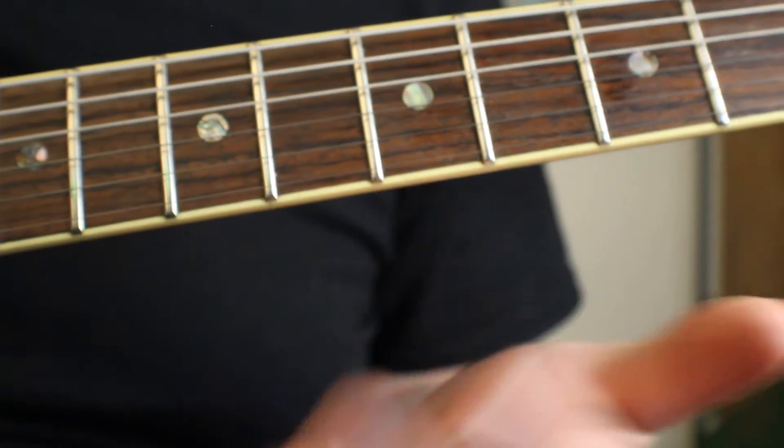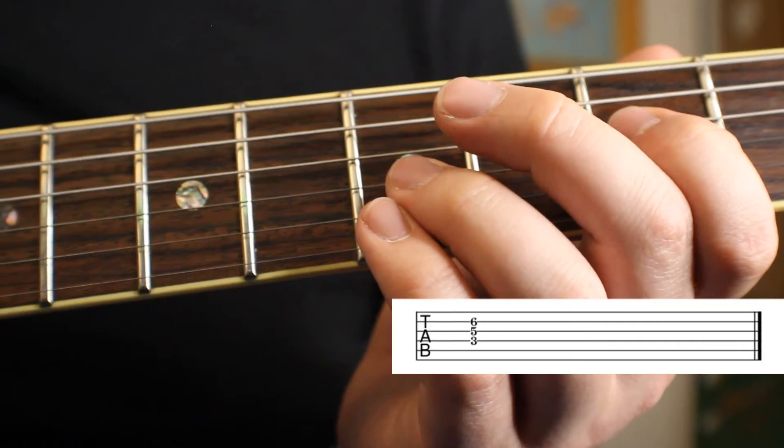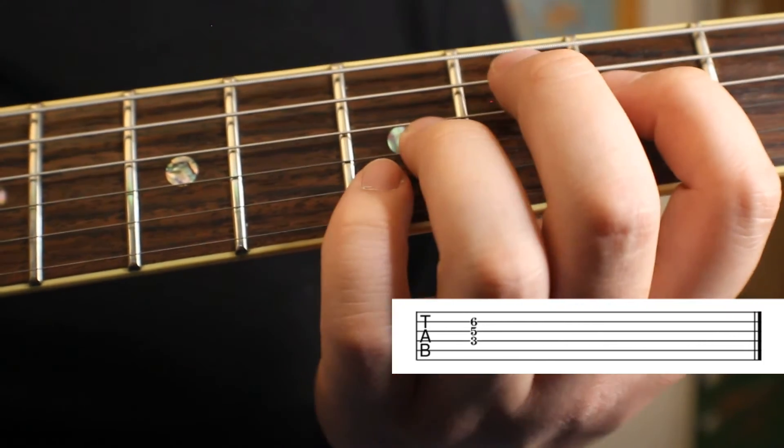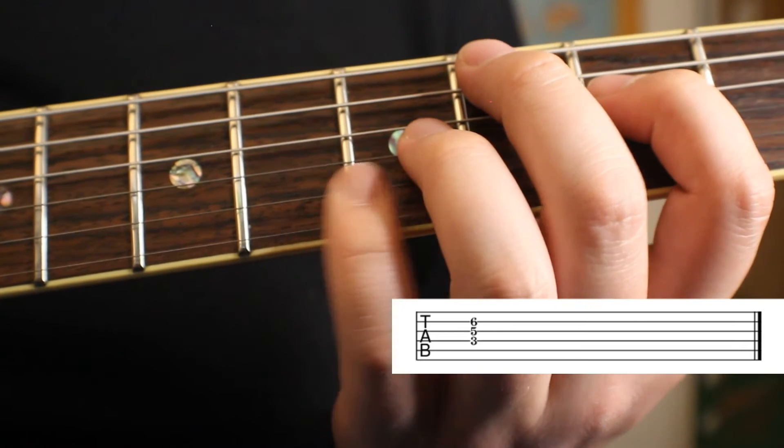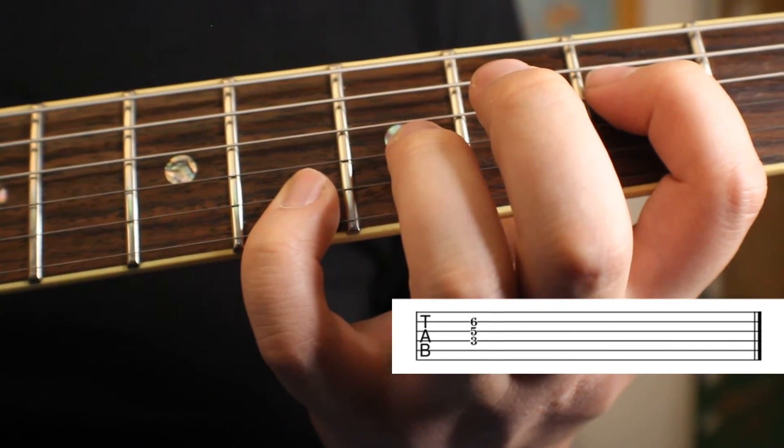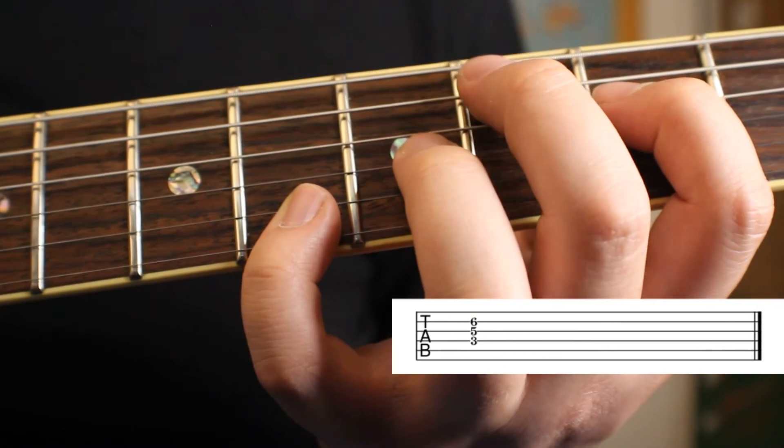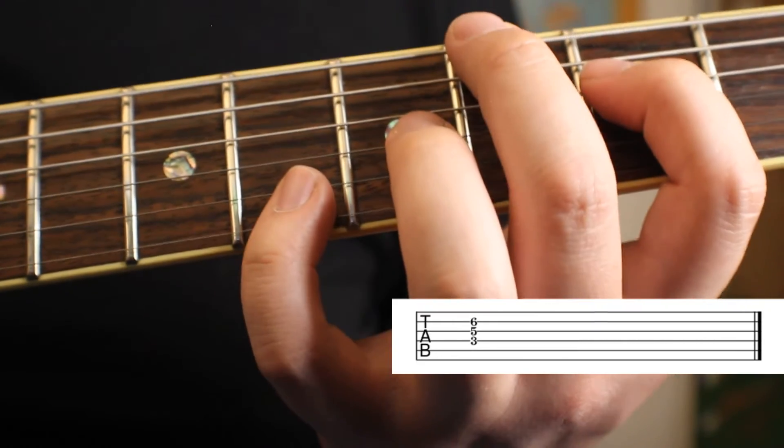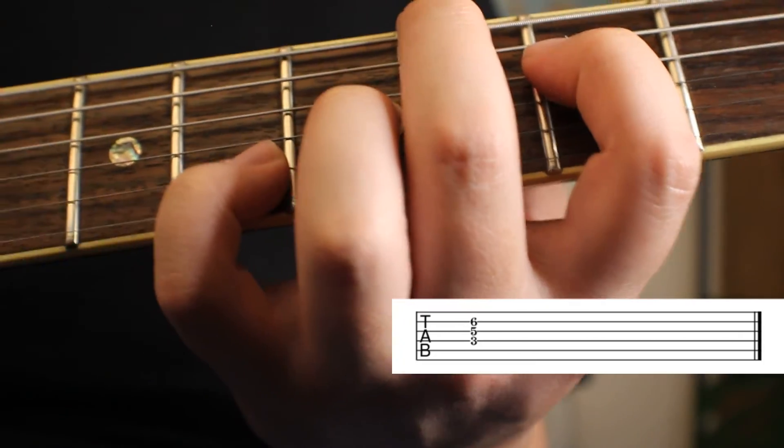This next position involves moving up the strings one more time. Pointer finger goes on the D string, ring finger on the G string. The pinky finger normally would get tucked up underneath the ring finger, but because of the way the guitar is tuned, we have to slide it over one fret to get that octave. My middle finger rests on the E string and A string to keep them muted, and the meat behind the knuckle mutes the top E string.